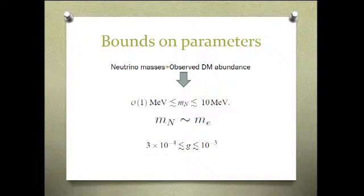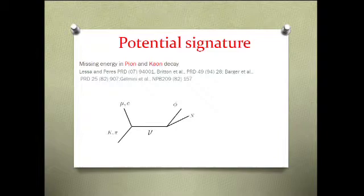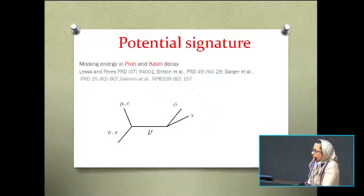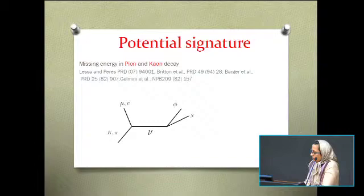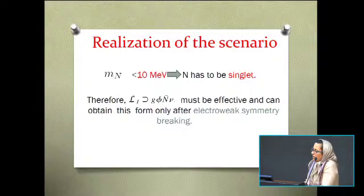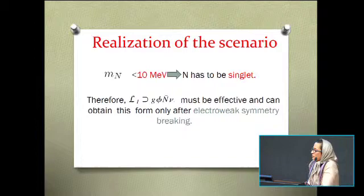You see that the new particles that we added turn out to be light, as light as electron. What really excites me about this scenario is that we also find a lower bound on the coupling. This means that this cannot be set arbitrarily small and this what excites me is that this means that the scenario is eventually testable. For example, we should be able eventually to find these particles in searching for rare decays of mesons. The new fermion that we added, as I said, is light.